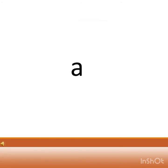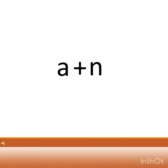Now children, as you can see on the screen, letter A says 'a', and N says 'n'. So when A and N are written next to each other, the sound that they make is 'an'. Now come on, let's read a few words that have the AN family word.